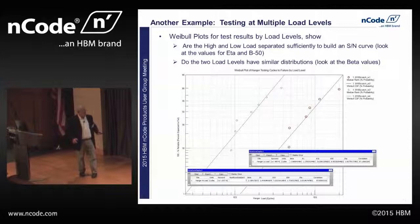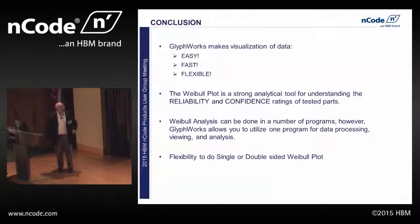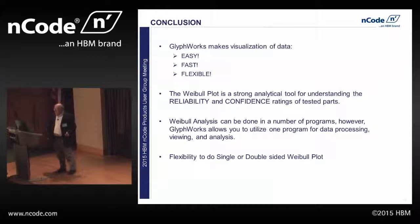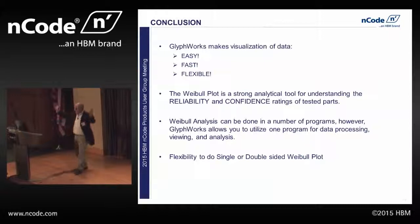In conclusion, Glyphworks makes visualization of data pretty easy — it's fast and flexible. The Weibel plot is a strong analytical tool that you can drop data points into just from a spreadsheet, a comma-separated variable file, or an Excel CSV file. You can easily find the reliability and confidence rankings. You can do this for either a double or single-sided analysis — like if you were cutting sticks into yard sticks and meter sticks, you'd want to know both a long end and a short end. But most of the time in metal fatigue, we're only concerned with a single-sided analysis.